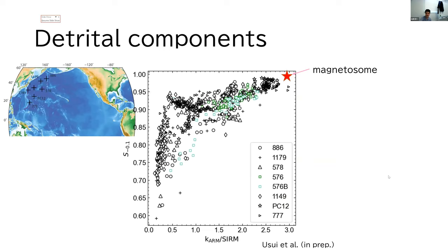Again, let me start from something simple. This is a cross plot of S-ratio for 100 millitesla and KARM over SIRM. Magnetosomes would plot somewhere here.